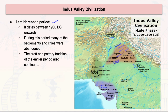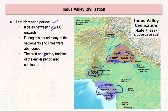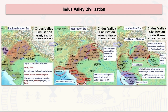If we talk about the late Harappan period, from 1900 BC onwards, cities were mostly abandoned but pottery traditions continued. The major cultures of this phase include Cemetery H culture, Jhukar culture, and Rangpur culture. The Cemetery H culture represents the localization phase — you can see how the transition from integration to localization happened, with geographical spread shown in the map. The Jhukar and Rangpur cultures were contemporaries.